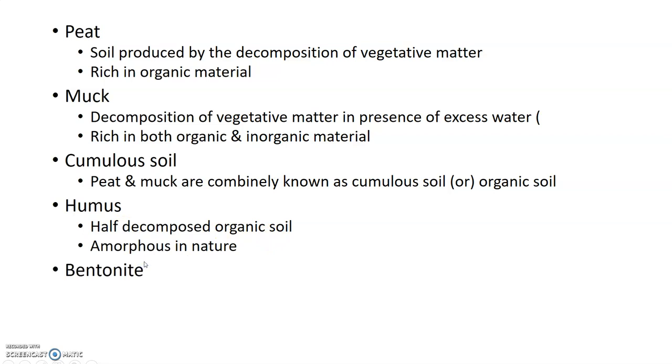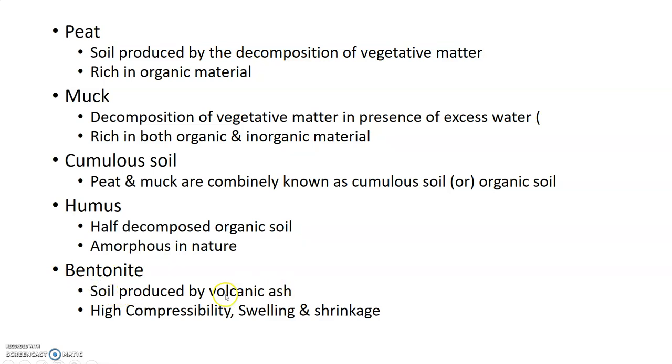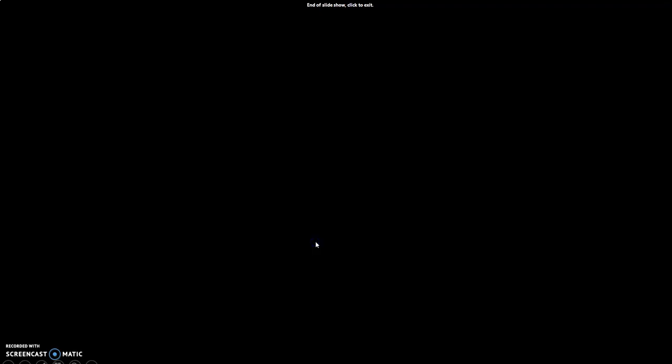Humus is half-decomposed organic soil. Bentonite is volcanic ash. It has high compressibility, high swelling, and low strength.